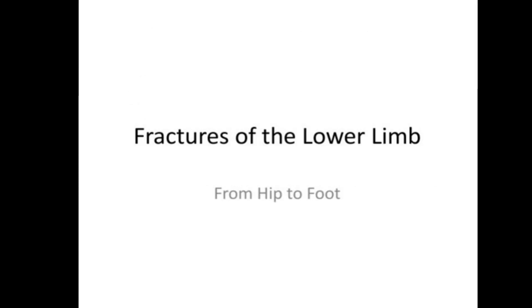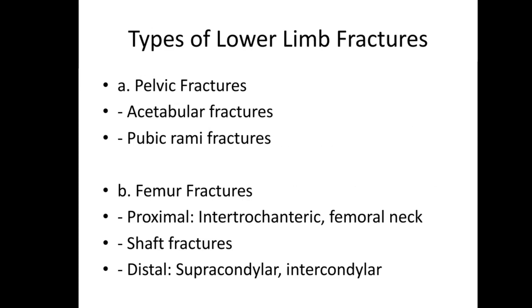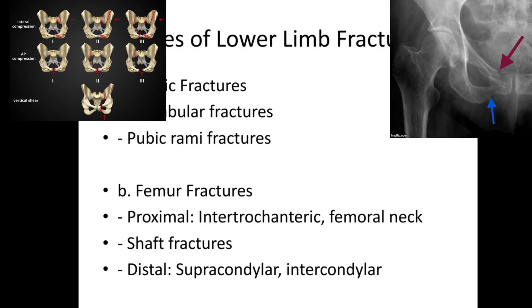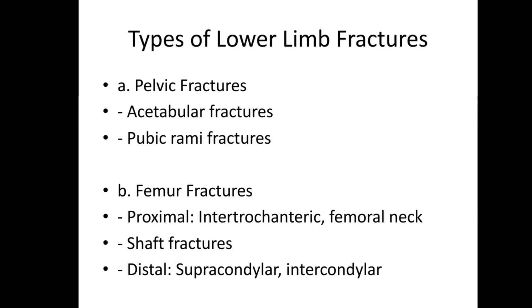Types of lower limb fractures: first, pelvic fractures, which include acetabular fractures and pelvic ring fractures. Femur fractures include proximal, shaft, and distal fractures. Proximal fractures include intertrochanteric and femoral neck fractures. Distal fractures include supracondylar and intercondylar fractures.